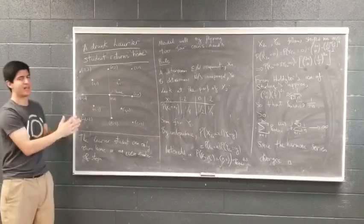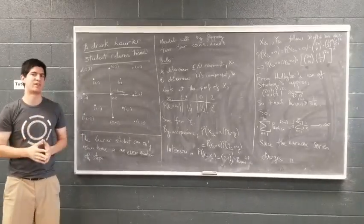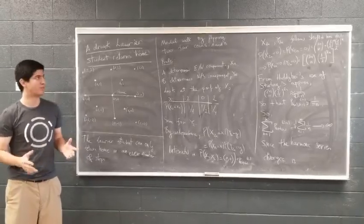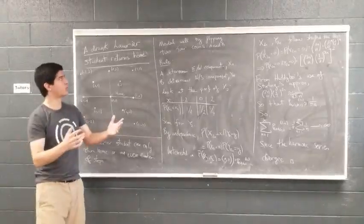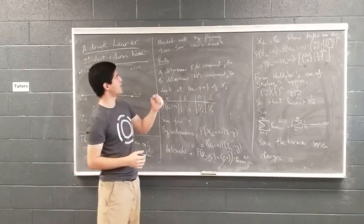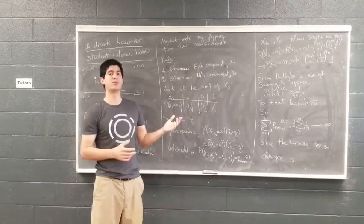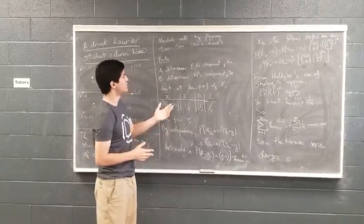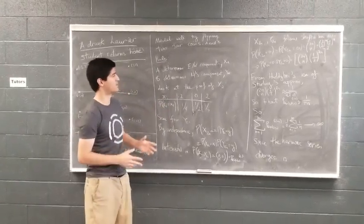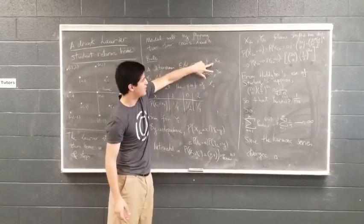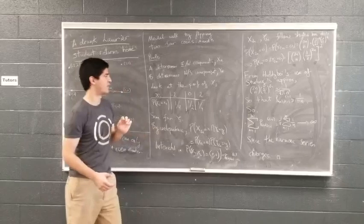We see from this lattice, in a similar fashion as the one-dimensional case, that the Laurier student can only return home in an even number of steps. We model the Laurier's decision-making by flipping two fair coins. One determines the east and west component of his walk, and the other determines the north and south component. Let's call these x_n for the position after n flips and y_n for the position after n flips.